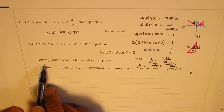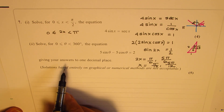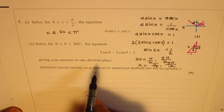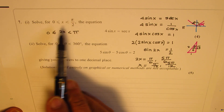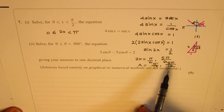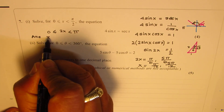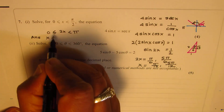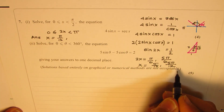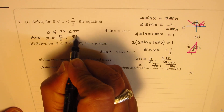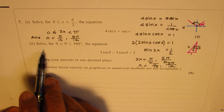Since the question says giving your answer to one decimal place — but there is no such restriction for part 1 — we can write the exact values as our answer. The value of x is π/12 and 5π/12. Now let's see how to solve the second one.